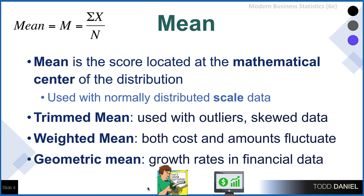The mean is the score at the mathematical center of the distribution. Typically, we use the mean with normally distributed scale-level data. The formula for the mean is in the upper left corner: add up all the scores in the sample and divide by the sample size. But we also learned some alternatives to the mean, such as the trimmed mean, which we tend to use when we have outliers that have skewed the data.